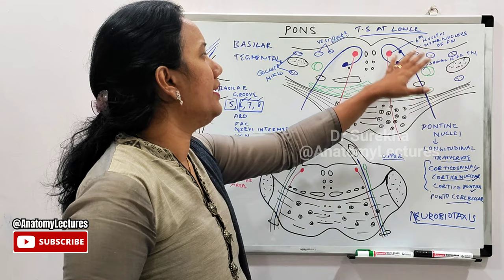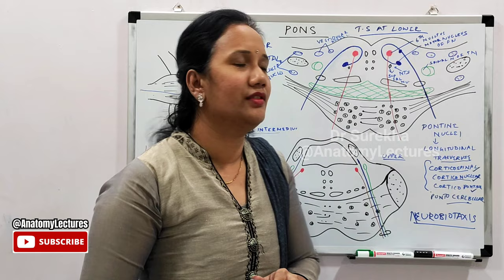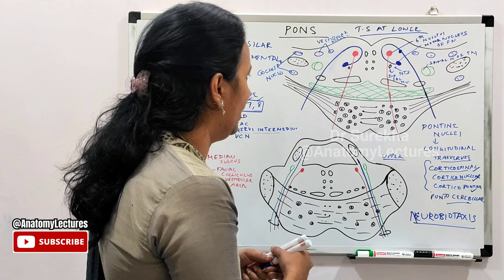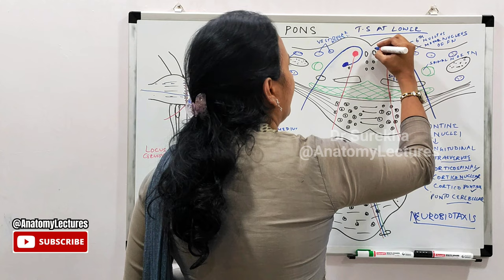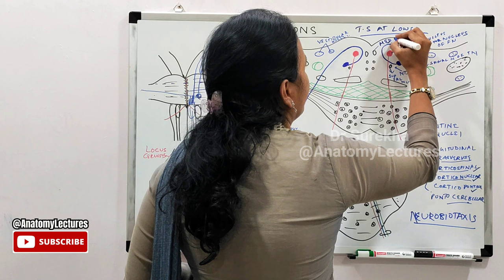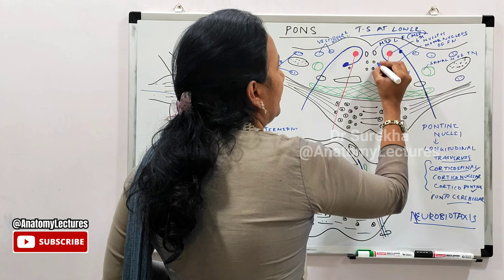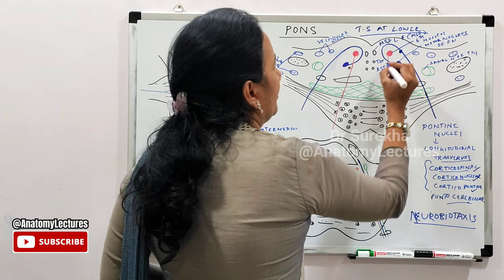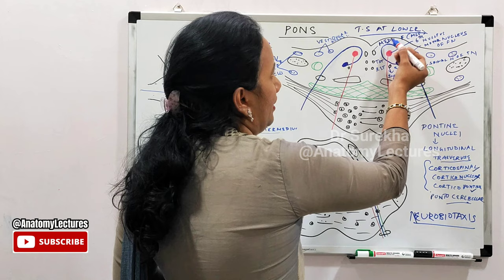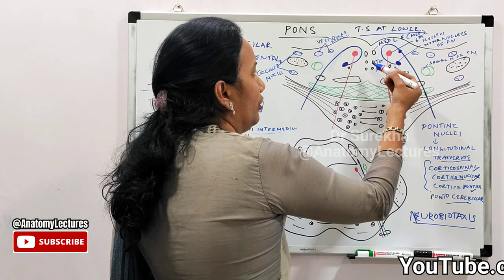Regarding ascending and descending tracts at the lower level: in the paramedian position there are three tracts. From dorsal to ventral: the medial longitudinal fasciculus (MLF) is the dorsal-most, then the tectospinal tract, and even more ventral the rubrospinal tract. Remember these as MTR.